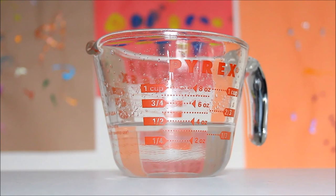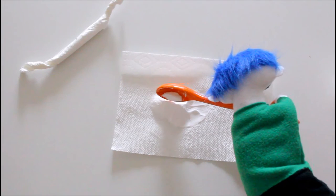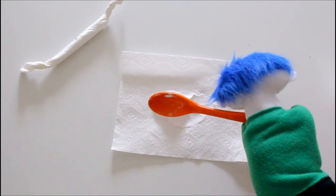Next, we are still going to use half a cup of vinegar, but this time we are going to use two tablespoons of baking soda.